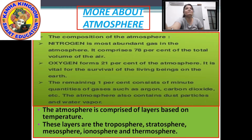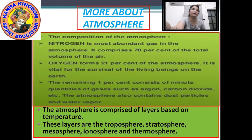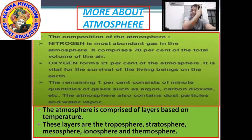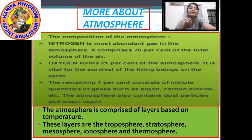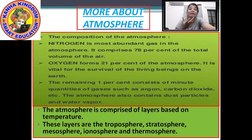Now let us see the composition of the atmosphere. Nitrogen is the most abundant gas in the atmosphere. Abundant means existing or available in large quantity. Nitrogen is 78% — 78% of the total volume of the air comprises nitrogen.